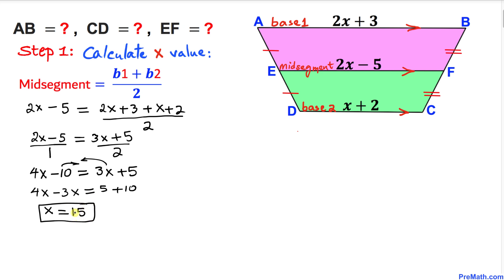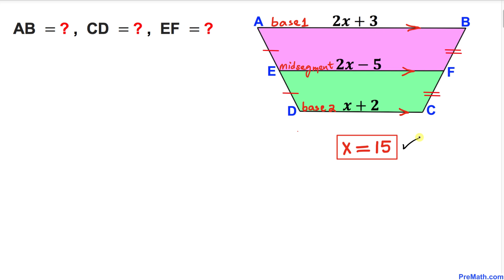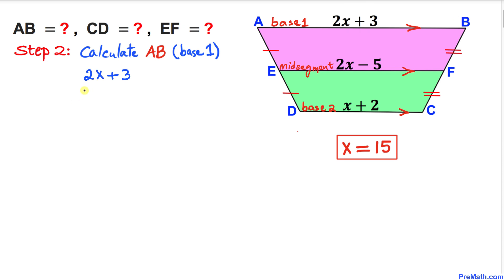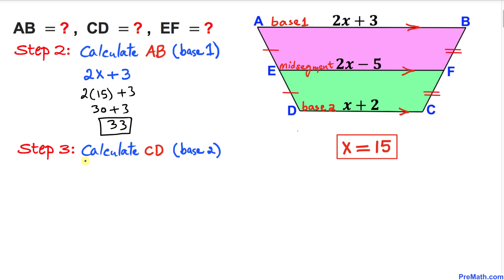Our x value turns out to be 15. Now let's calculate the value of AB, which is Base 1. Substituting x = 15 into 2x + 3: 2 × 15 + 3 = 30 + 3 = 33. So AB = 33.